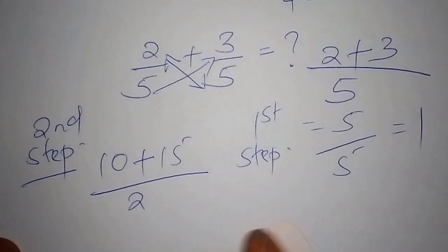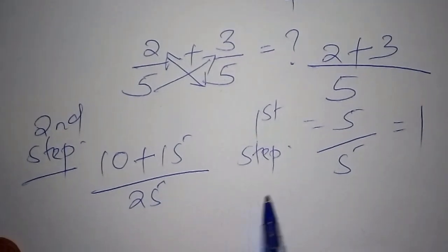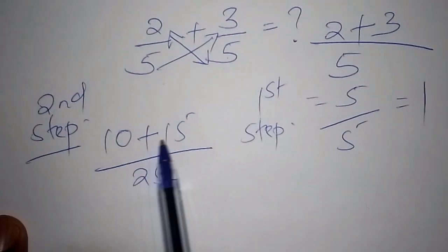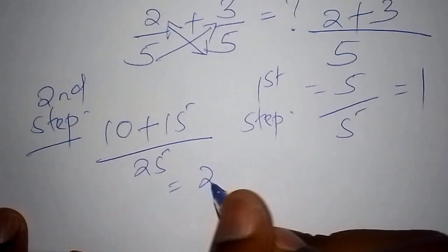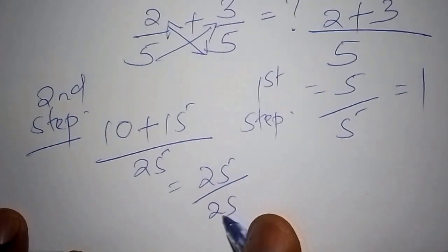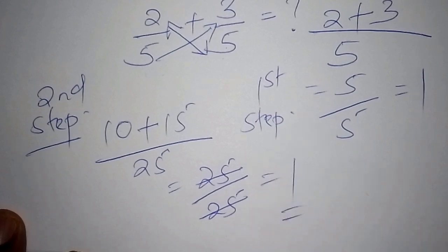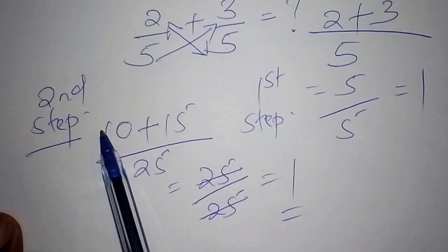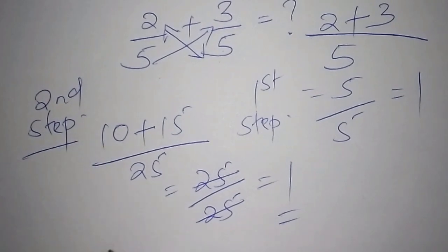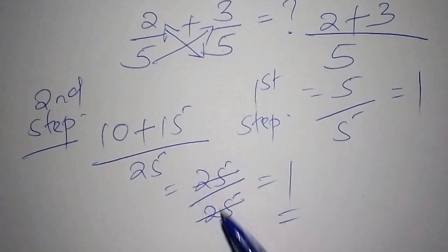5 times 5 gives us 25. So we have 10 plus 15, which is 25, out of 25. When we cancel, we remain with 1 — the same result as in Method 1. It's the same formula, and it's all about finding the math tricks to solve fractions.